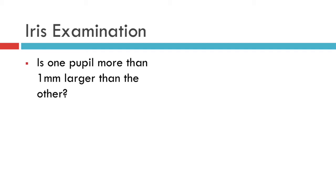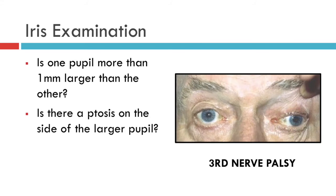However, if the larger pupil is associated with a ptosis — that is to say a droopy eyelid — and particularly if there is a misalignment of the eyes causing double vision, you should search for a cause of a third nerve palsy, such as one due to a brain tumour or a berry aneurysm of the circle of Willis.